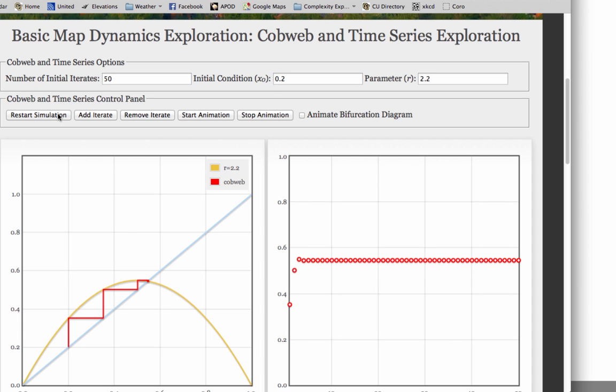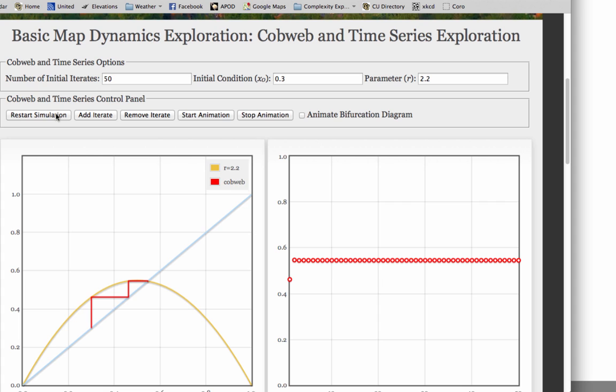Different transient, same fixed point. Different transient, still goes to the same fixed point. The way we think about that behavior, a whole bunch of initial conditions going to the same attractor, is by defining something called a basin of attraction.